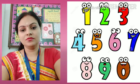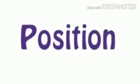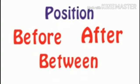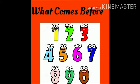Children, do you know every number has a fixed and unique position or place in the counting? Generally, we can see a number at three different positions or places, and these three positions are before, after, and in between. But today we are going to find out what comes before a particular or a given number.